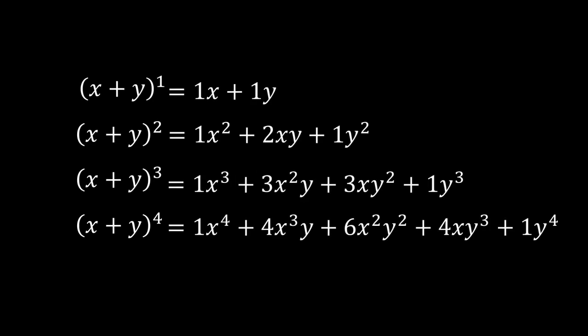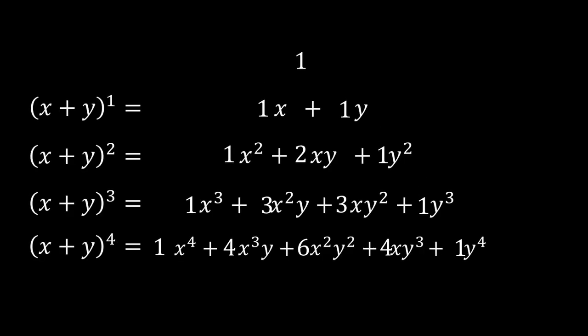I want you to notice the pattern in the coefficients here. If I remove all the variables in each term, you might see a familiar pattern. It turns out that the coefficients are just the numbers in Pascal's triangle. But why? Adding numbers to form a triangle and algebra seems to be something completely different. So why do they relate?